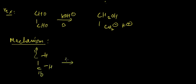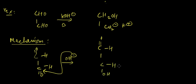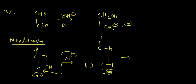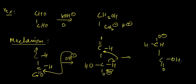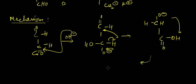OH- attacks one of the carbonyl carbons — since both are symmetrical, either can be attacked — giving OH and H attached. We also have O-, and for symmetry we place OH and O- accordingly. This oxygen takes back its bonding electrons, and we get a jumping of negative charges and bonds, giving O- with H and H double bond OH.